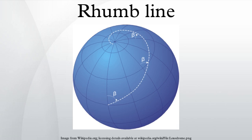On a stereographic projection map, a loxodrome is an equi-angular spiral whose center is the north pole. All loxodromes spiral from one pole to the other. Near the poles, they are close to being logarithmic spirals, so they wind round each pole an infinite number of times but reach the pole in a finite distance.